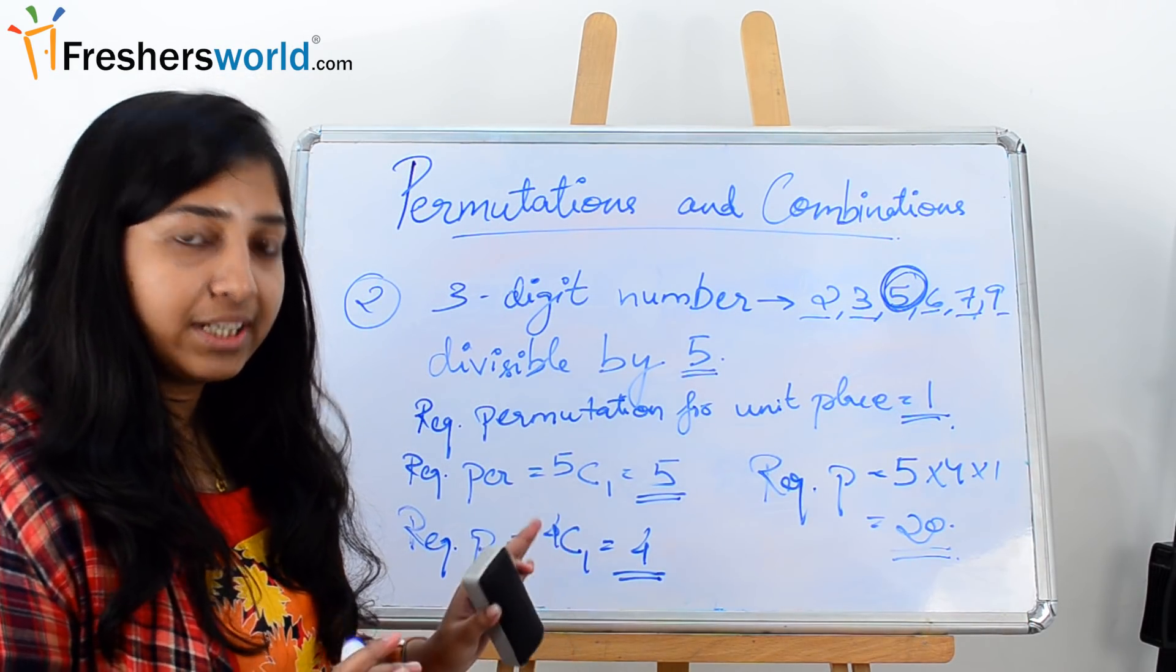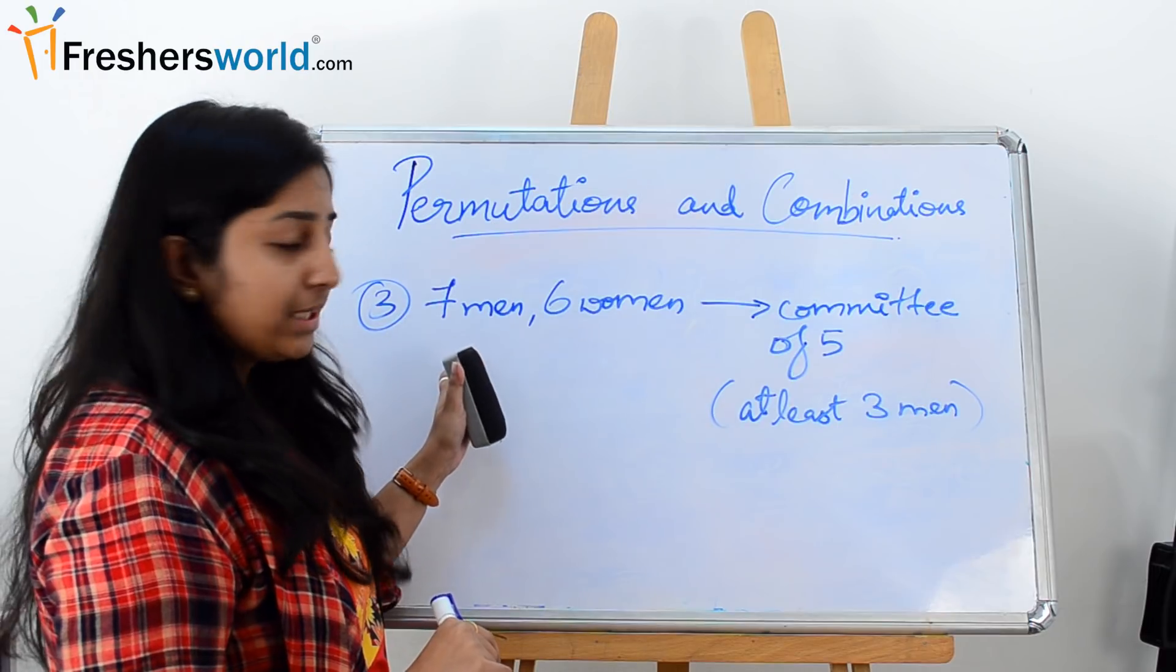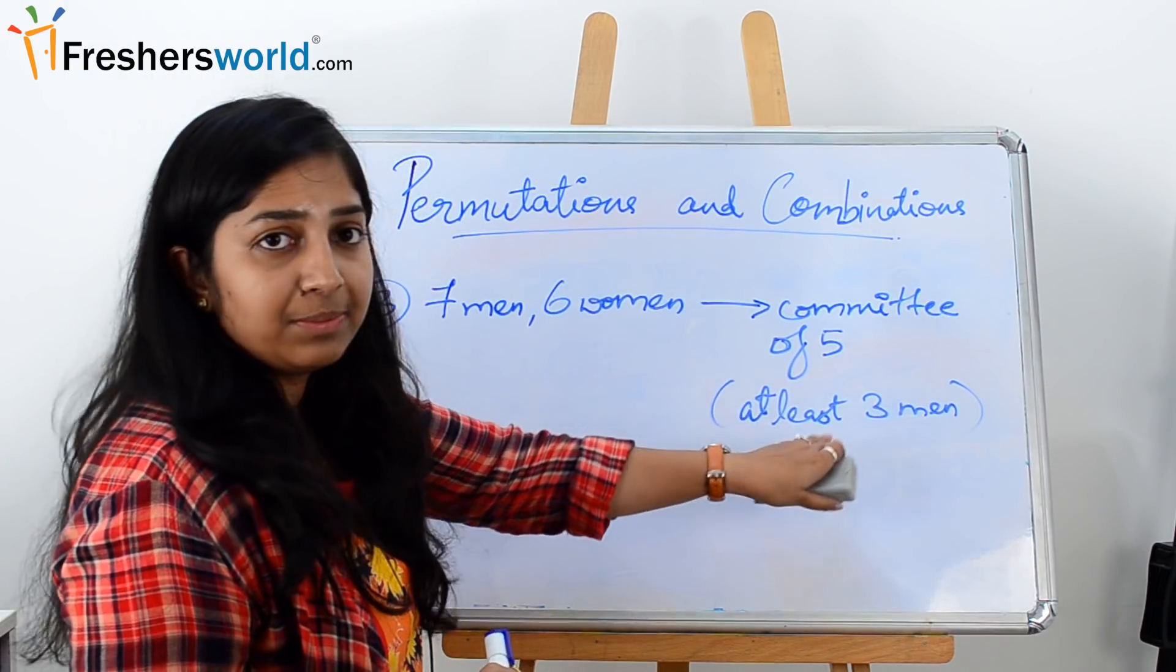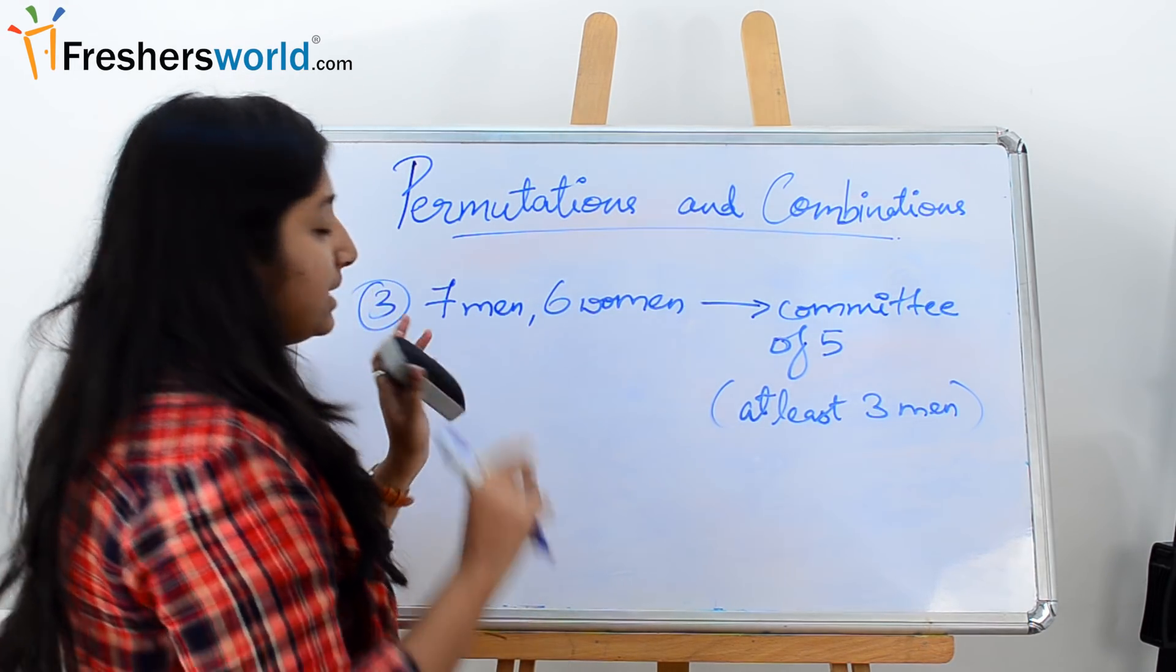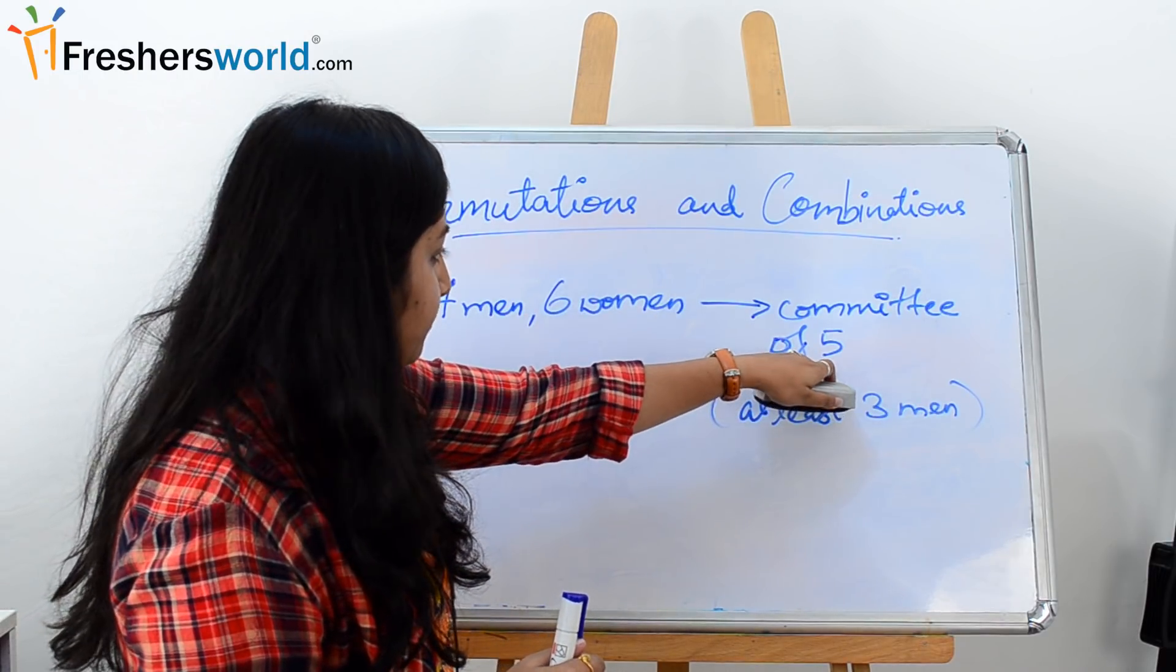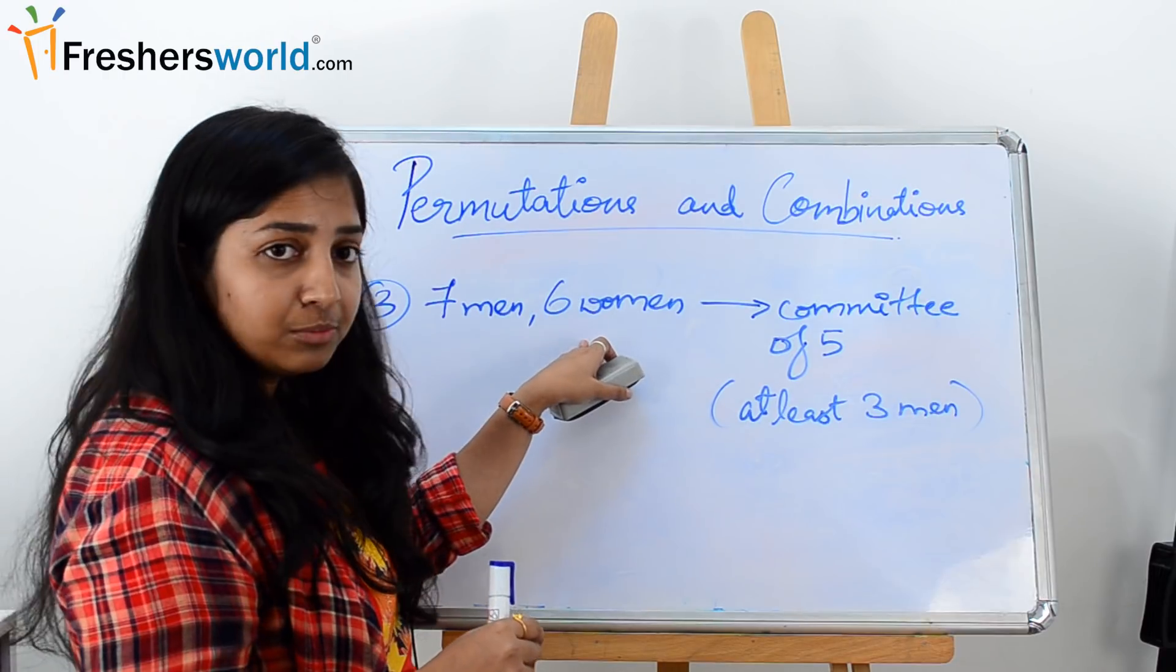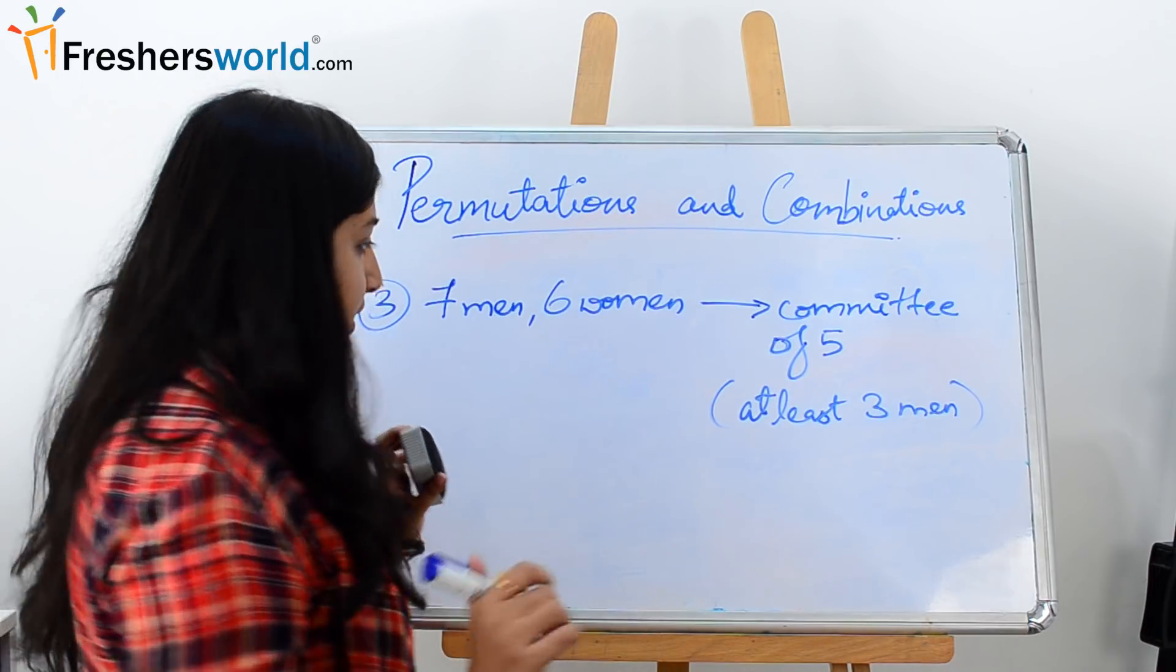So let's move on to our next question now. The third question is that we have 7 men and 6 women, and we have to create a committee of 5 such that it should have at least 3 men in it. So what are the possible ways that we can group them? So see, there can be 3 cases now.